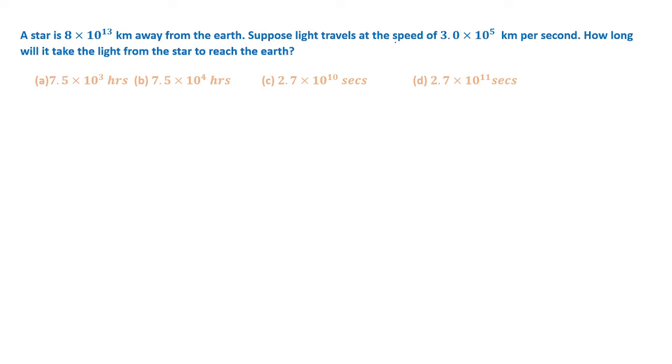Suppose light travels at a speed of 3 × 10^5 km per second. How long will it take the light from the star to reach the earth?